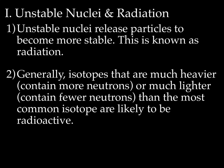Some background information on unstable nuclei and radiation. As we talked about in the last lecture, unstable nuclei release particles to become more stable. This is known as radiation. Remember, unstable nuclei are the ones that are too crowded. There's either too many protons and neutrons, or not enough neutrons. Generally, isotopes that are much heavier, meaning contain more neutrons, or much lighter, containing fewer neutrons, than the most common isotopes are likely to be radioactive.